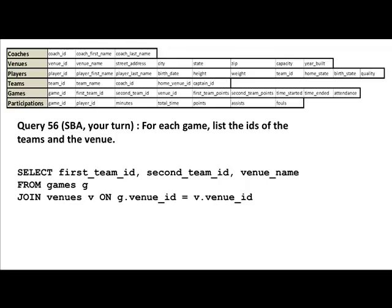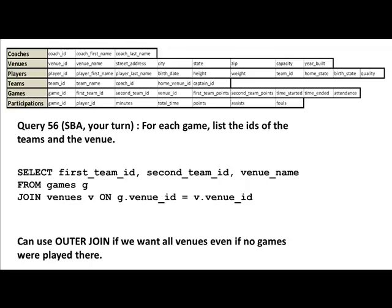We want the venue name, and you get the venue name by joining the games table with the venues table. So: from games g join venues v on g.venue_id equals v.venue_id, because the games table has a field called venue_id and the venues table also has its key as venue_id. That's going to give us the results — fairly straightforward. Of course, if we want all venues even if no games have been played there, we could use an outer join.